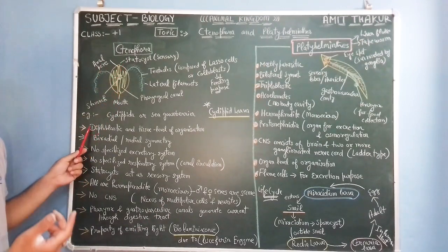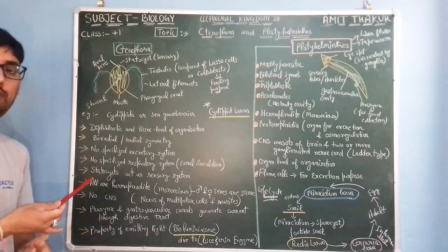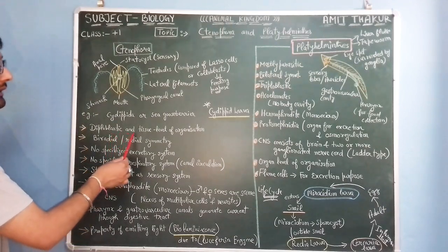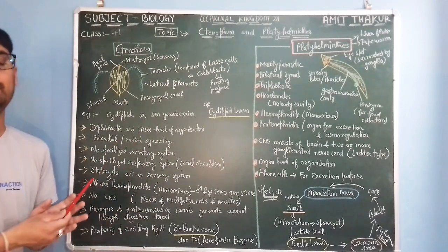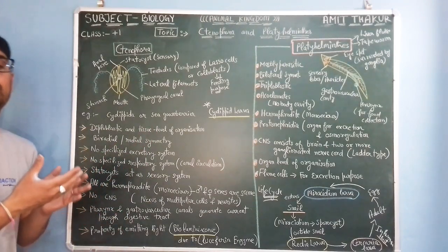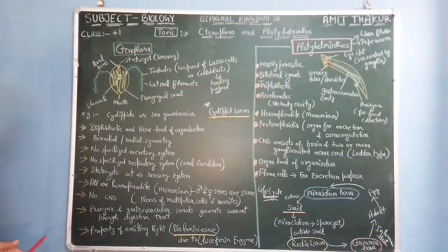So these Ctenophora, they are diploblastic, only two germ layers are present, ectoderm and endoderm, and having tissue level of organization like in case of Coelenterata. Porifera, they have cellular level of organization.